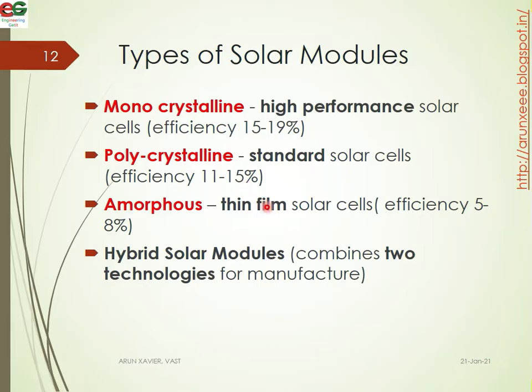Amorphous is a very thin film solar cell. It is a rolling type of solar material used in thin film applications.